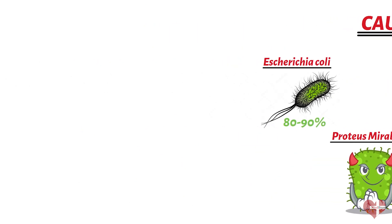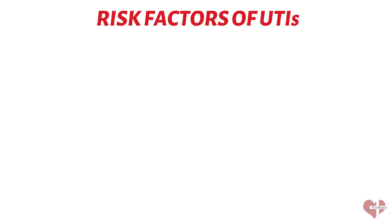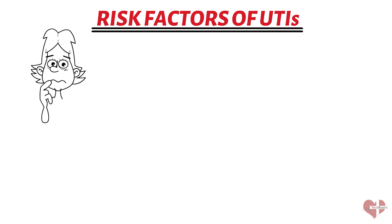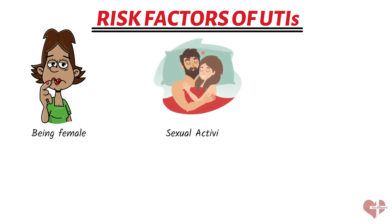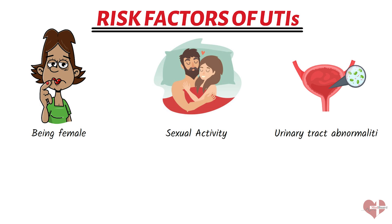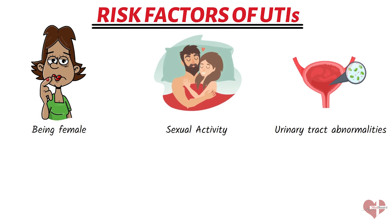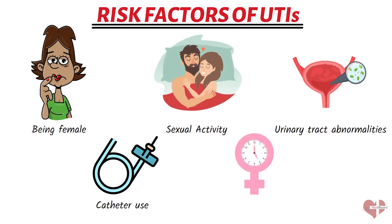There are also several factors that can increase the risk of developing a UTI, including being female. Women are more likely to develop UTIs than men, partly because their urethras are shorter and closer to the anus, which makes it easier for bacteria to enter the urinary tract. Other risk factors include sexual activity, urinary tract abnormalities, catheter use, and menopause.